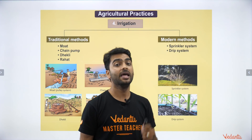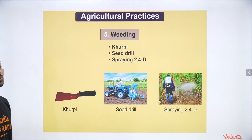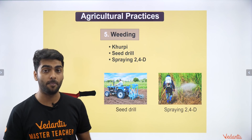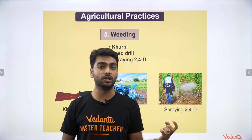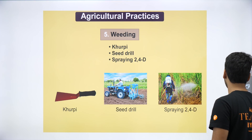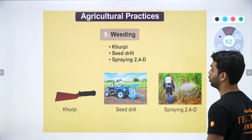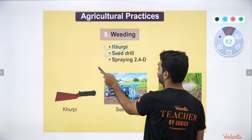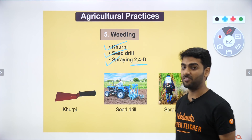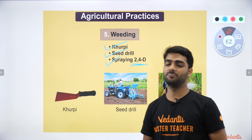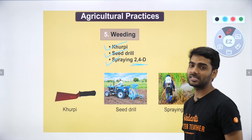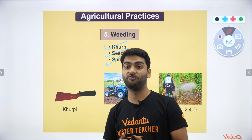Weeds are unwanted grass or plants that grow near your crop and stop its growth because they absorb all the nutrients. Weeding is the process of removing this excessive growth near your crops. Weeding can be done with the help of a Kurpi, a seed drill, or by spraying 2,4-D, which is a toxic spray that kills weeds. However, Kurpi or seed drill is recommended as 2,4-D can also affect the crops.